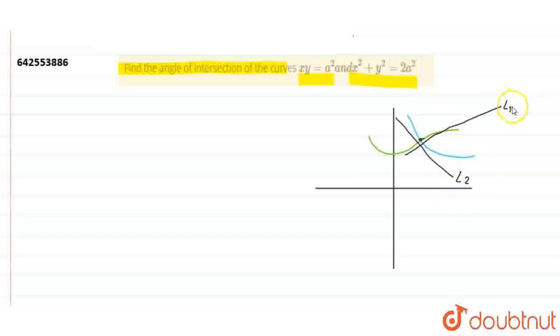This L1 line makes an angle theta1 with the x-axis. The angle between the two curves can be given as theta, which is theta1 minus theta2. This concept is going to be used in this question.